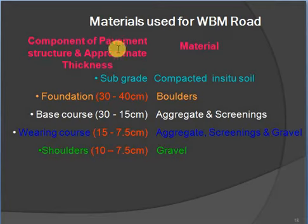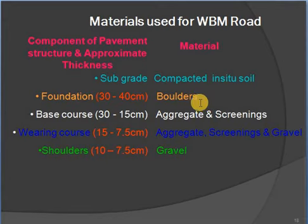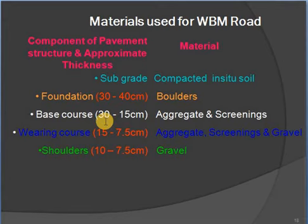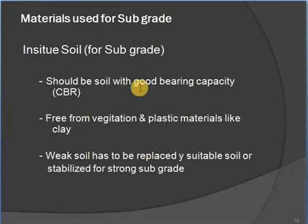Materials used for WBM road — this is a very important component of pavement structure. Approximate thickness by layer: subgrade — compacted in-situ soil; foundation — 30 to 40 cm boulders; base course — 30 to 150 mm aggregate and screenings; bearing course — 15 to 7.5 cm aggregate, screenings, and gravel; and shoulders — 10 cm.